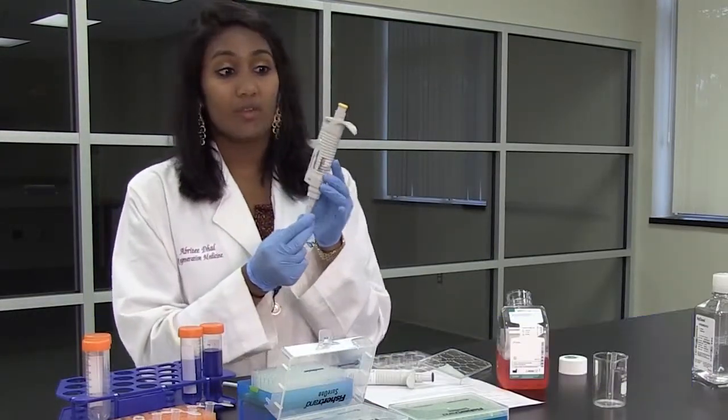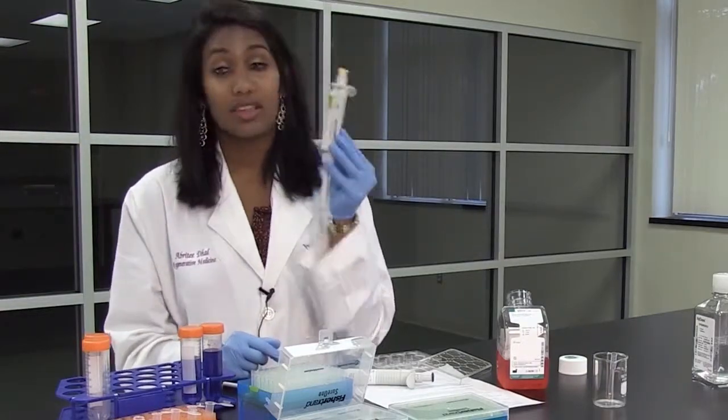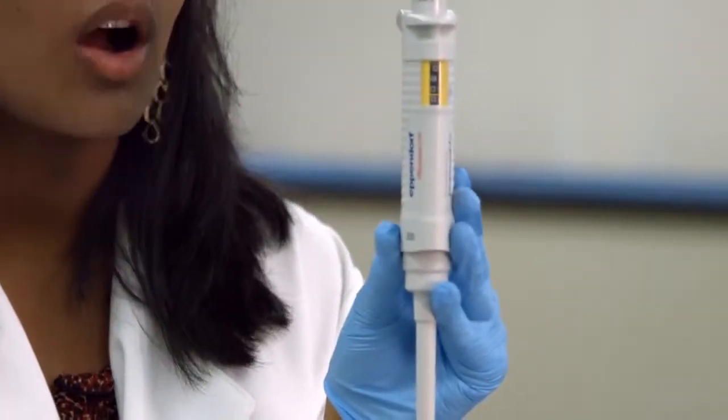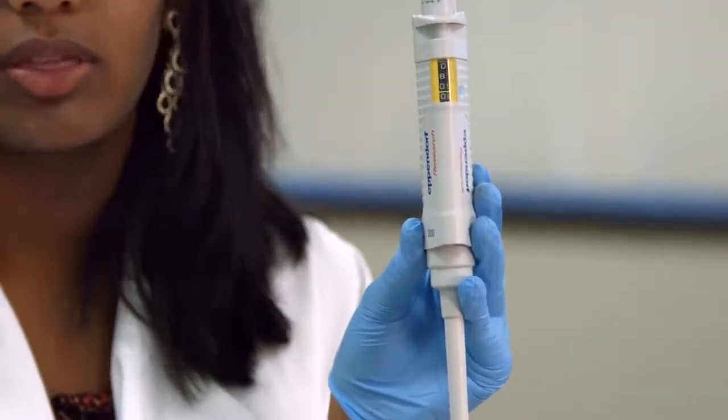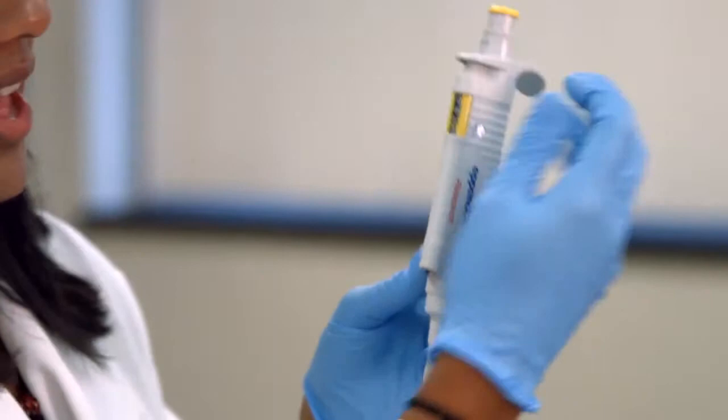So on the P200, if we want to do 80 microliters, this is what 80 microliters look like. But on the P200, you can also do 80.5, 80.3, 80.2, and that's this bottom.